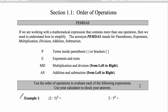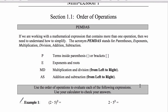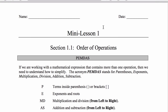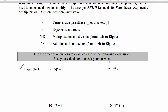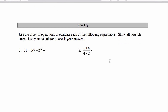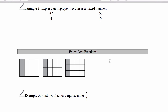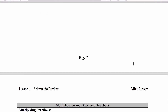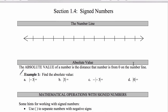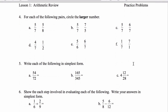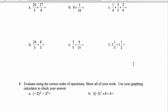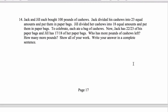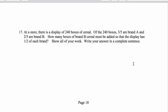Even if you know how to do it, I still want you to watch this and make sure we're all on the same page. In the video description there is a link to download an 18-page packet. Section 1.1 reviews order of operations, 1.2 reviews fractions, 1.3 reviews operations on fractions, and 1.4 covers signed numbers — positives and negatives. There is also practice work for you to show that you can do it.